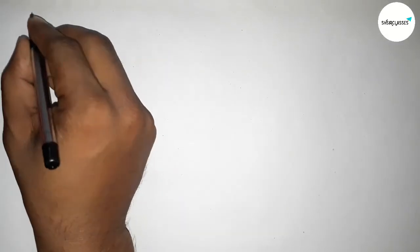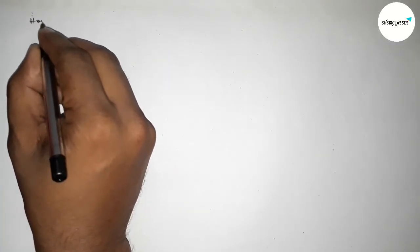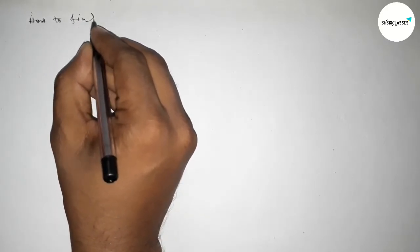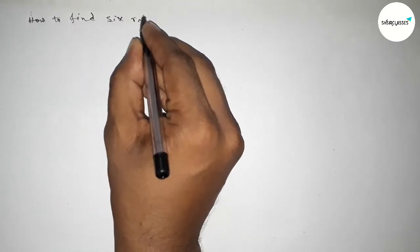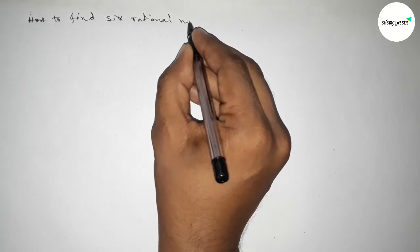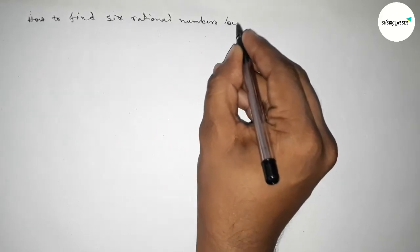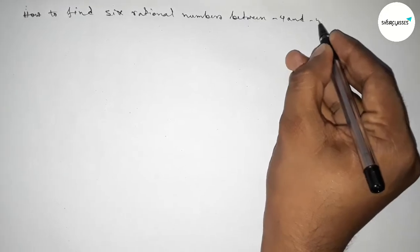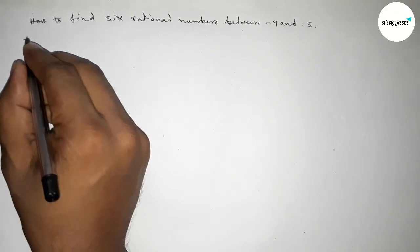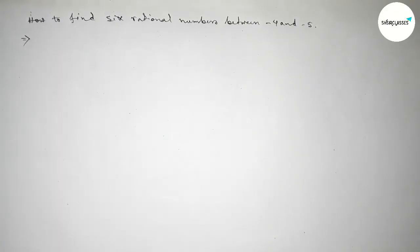Hi everyone, welcome to SI Chair Classes. Today in this video we have to find out six rational numbers between minus 4 and minus 5. So let's start the video. First of all, let's solve this problem.